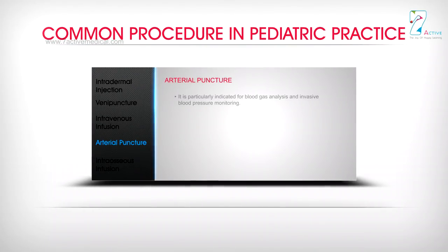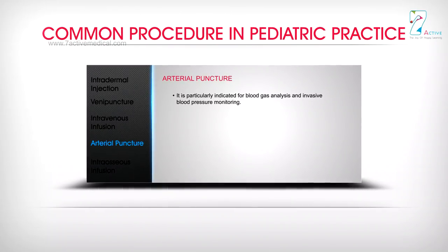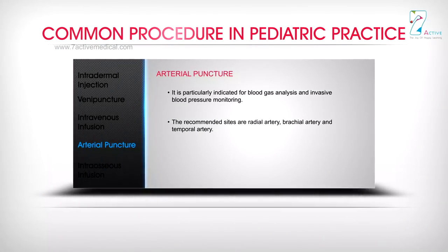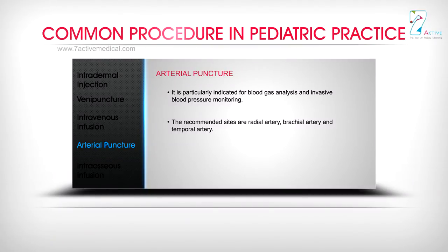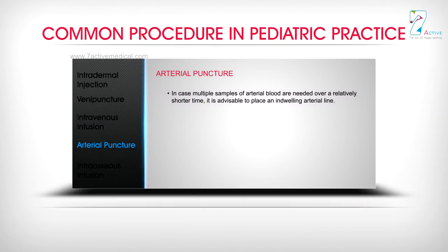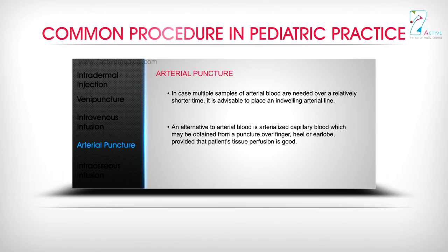Arterial puncture is particularly indicated for blood gas analysis and invasive blood pressure monitoring. The recommended sites are the radial artery, brachial artery, and temporal artery. Since arterial puncture is often painful and may cause hyperventilation, it may be appropriate to employ local anesthesia. If multiple samples of arterial blood are needed over a short time, it is advisable to place an indwelling arterial line. An alternative is arterialized capillary blood, obtained from a puncture over the finger, heel, or earlobe, provided tissue perfusion is good.